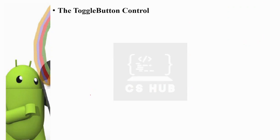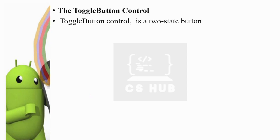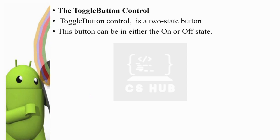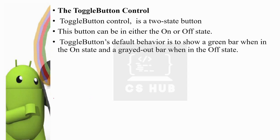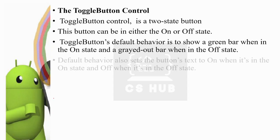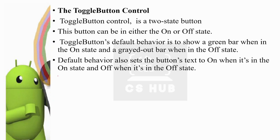The next category is the toggle button. Toggle button is a two-state button. This button can be either in the on or off state. Toggle button's default behavior is to show a green bar when in the on state, and a grayed-out bar when in the off state. Default behavior also sets the button's text to 'on' when in the on state and 'off' when in the off state.